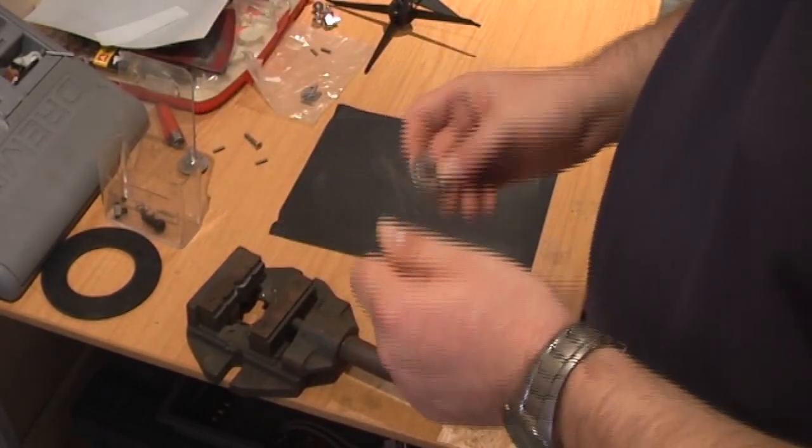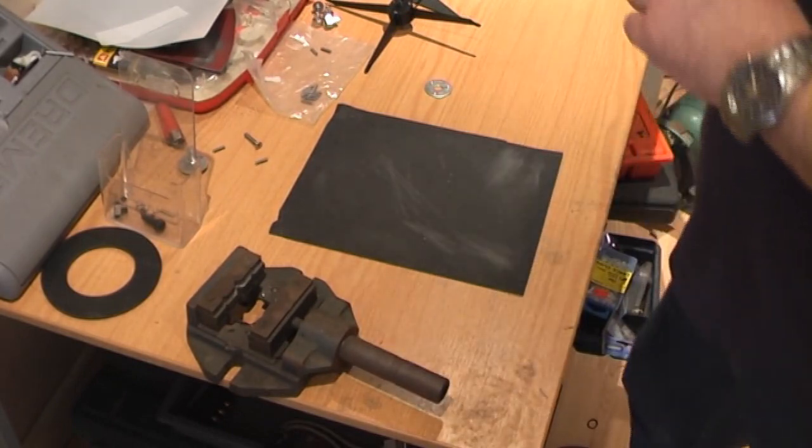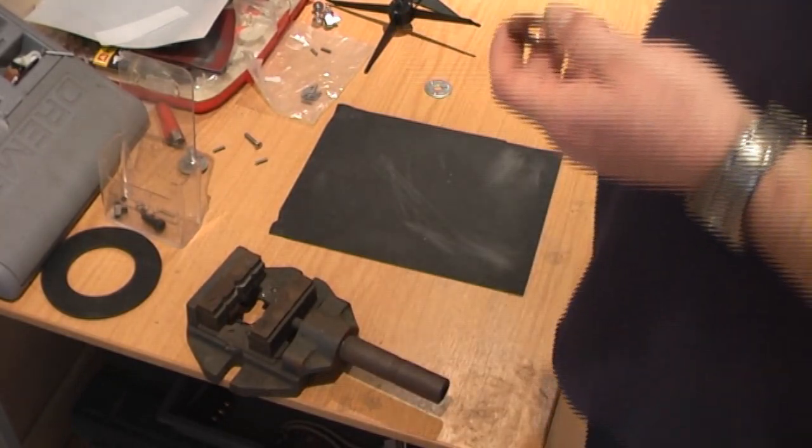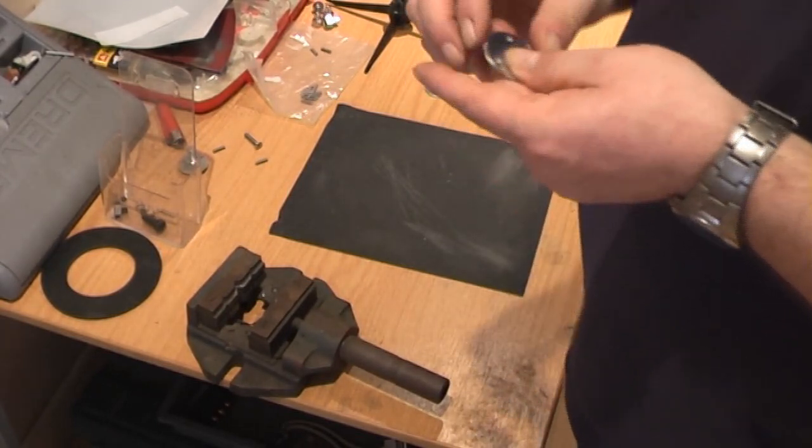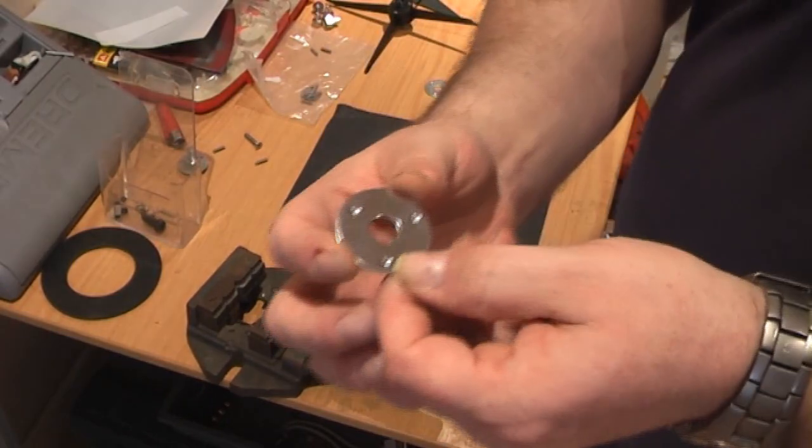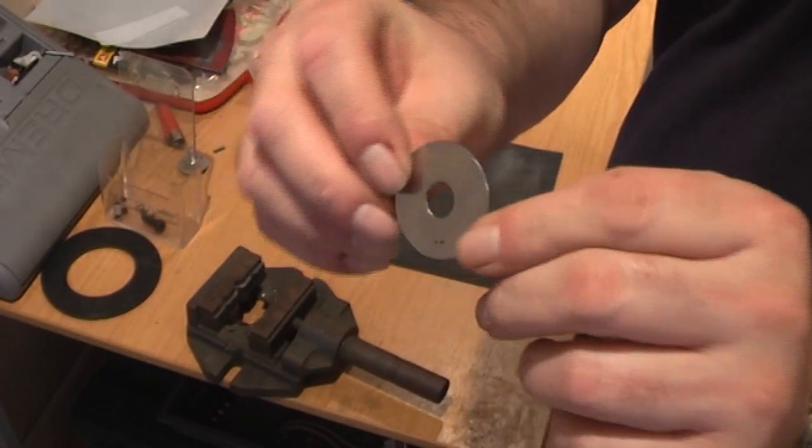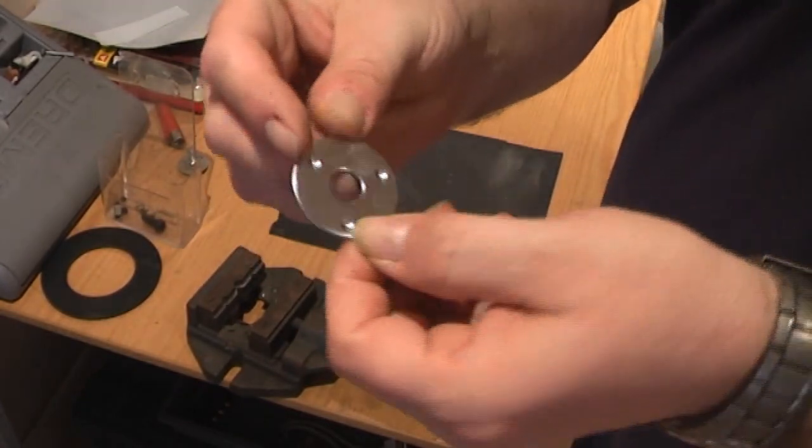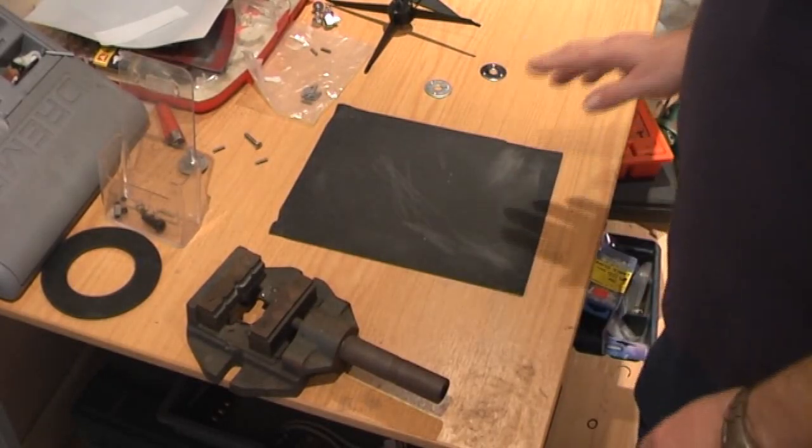Once you've done that, I used a pillar drill with a feed stop so that I could drill exactly the same amount into each side of my washer. Then I rubbed it down and cleaned it up, and this, believe it or not, is that same stainless steel washer after being cleaned up.